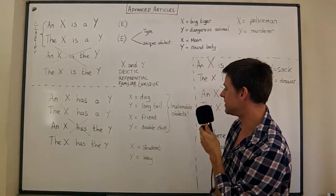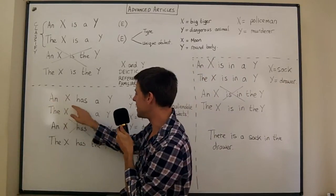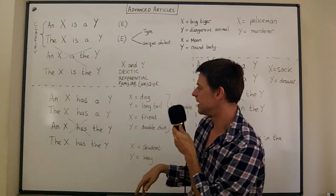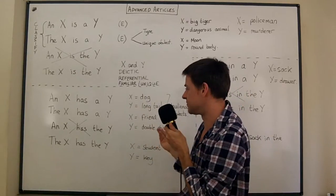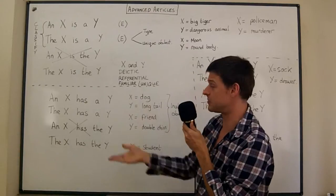What about friend and double chin? Maybe your friend has a double chin. Well if you say a friend has a double chin, again it's very light on information. The friend has a double chin - you know which friend, maybe your friend.